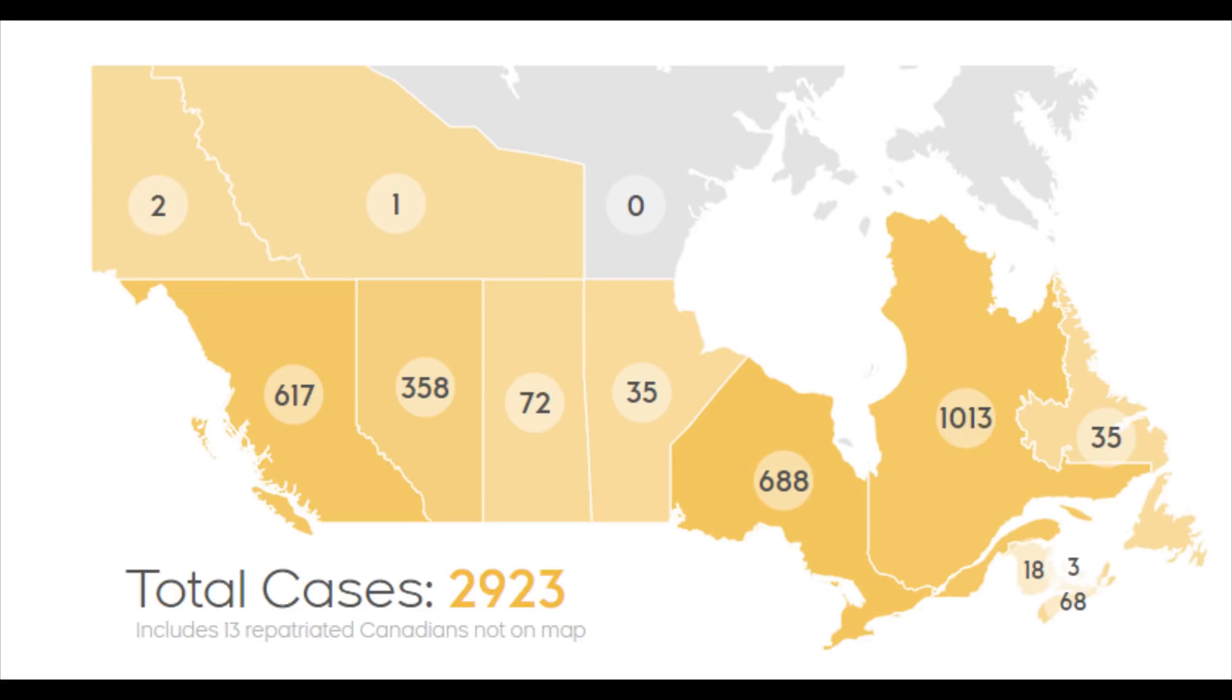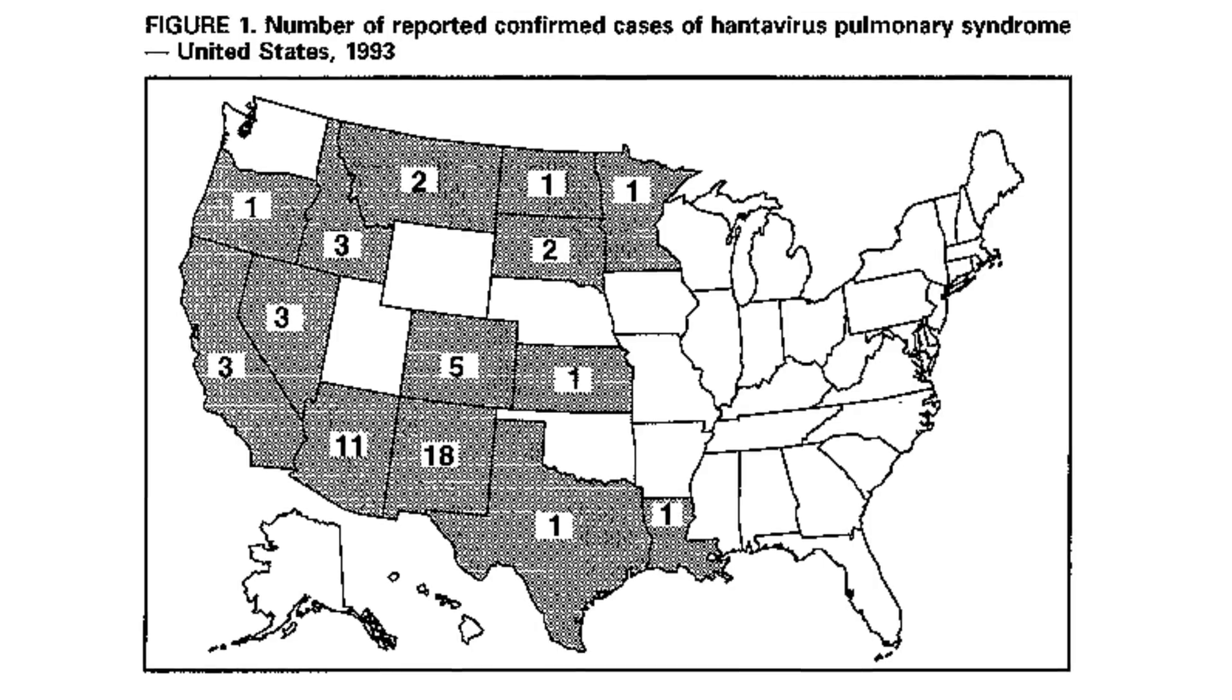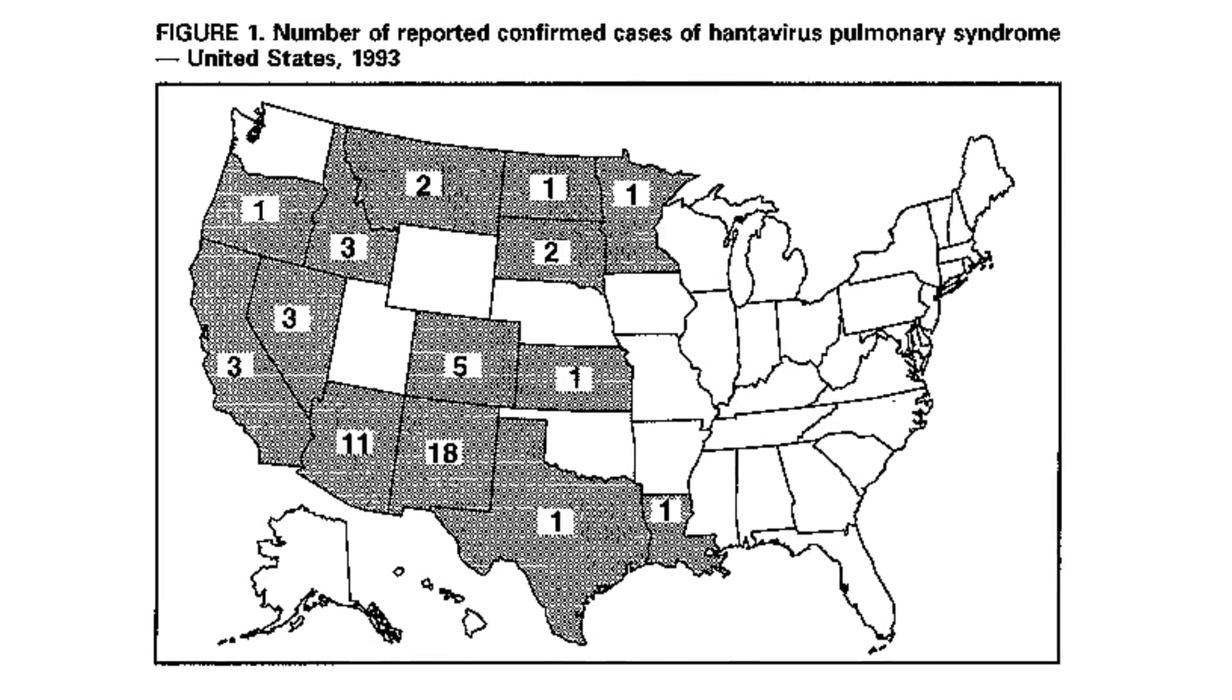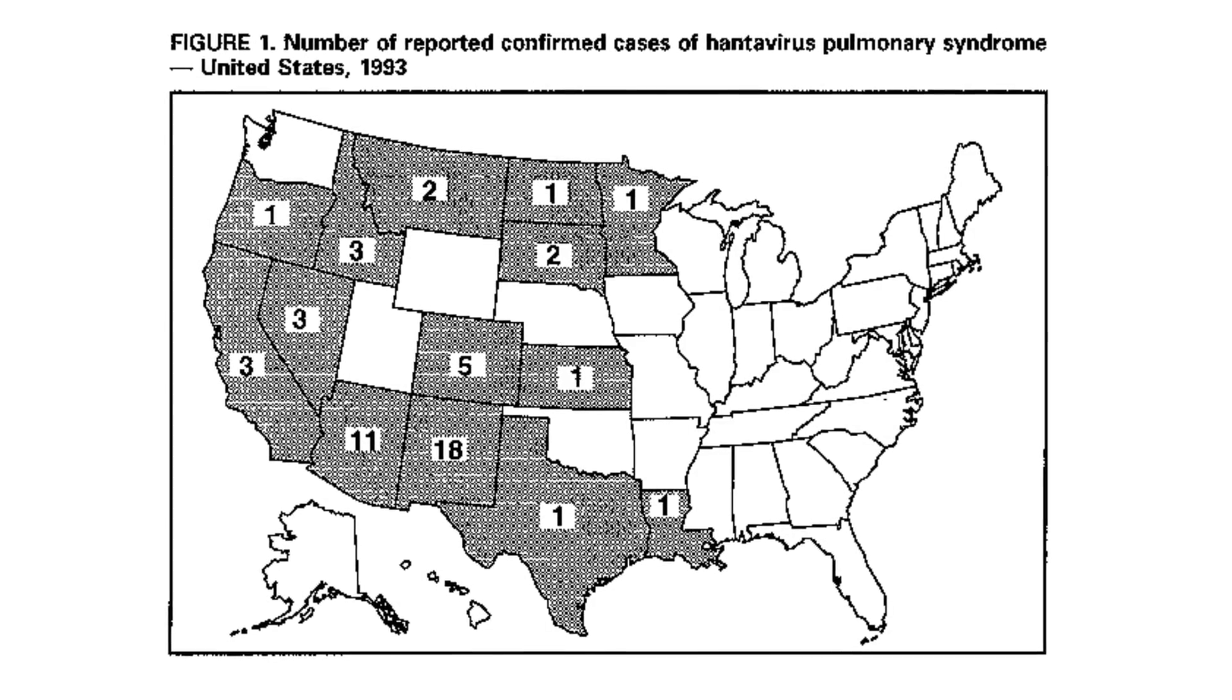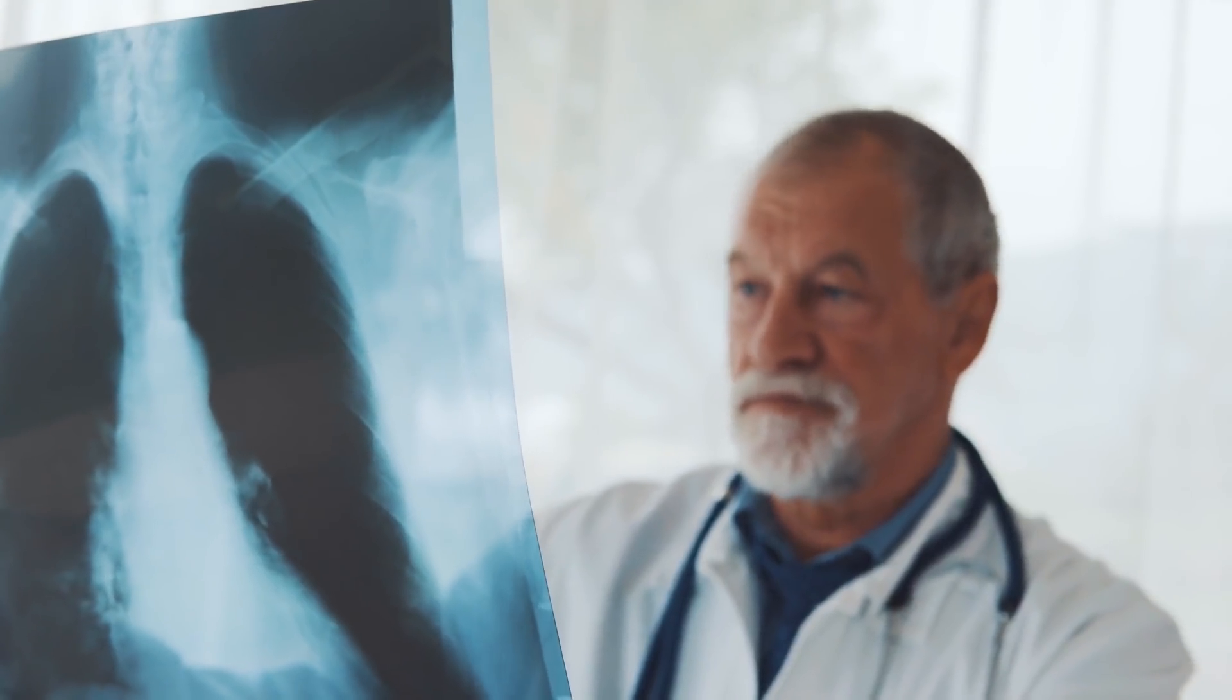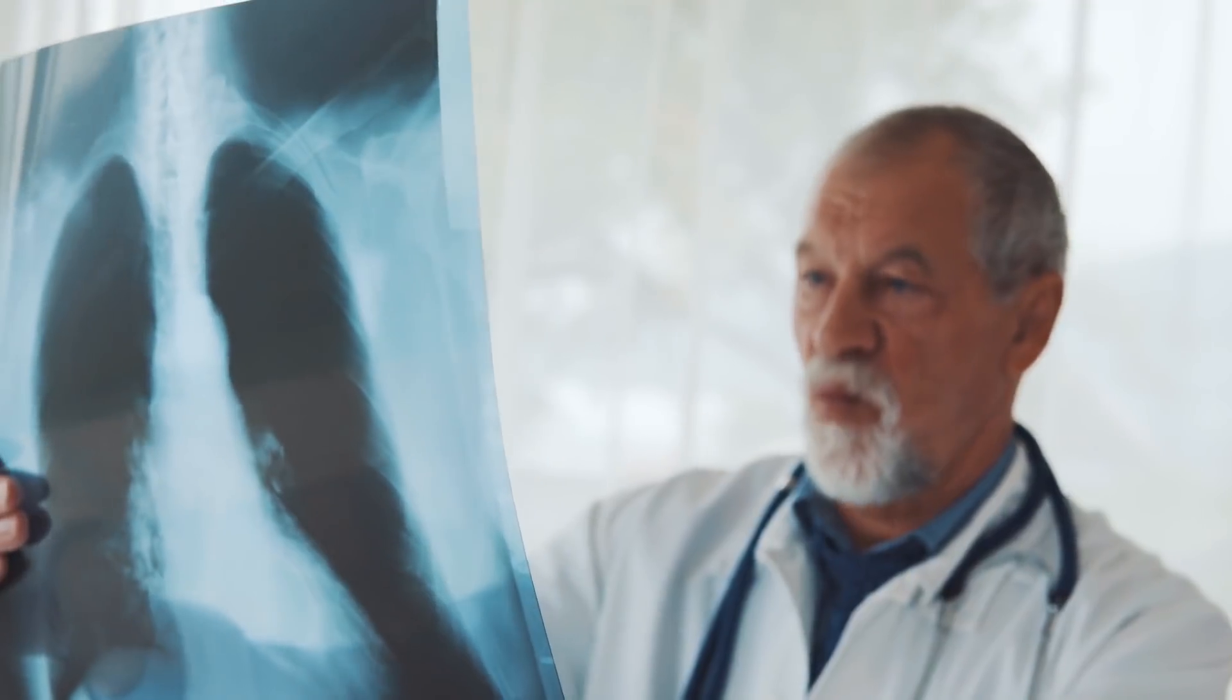However, there have been outbreaks before. Back in 1993, an area between Arizona, New Mexico, Colorado, and Utah called The Four Corners was determined to be where the first outbreak of the Hantavirus occurred in the United States, after a handful of people came down with an unexplainable illness.